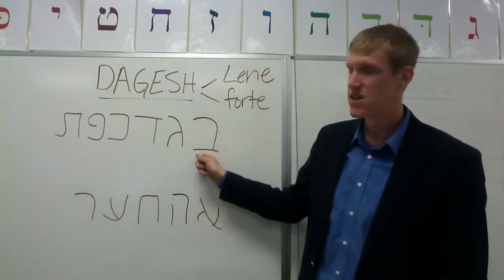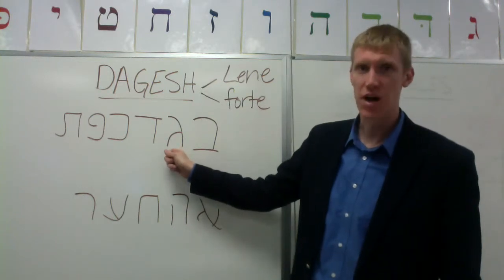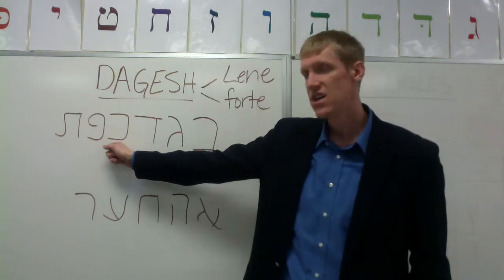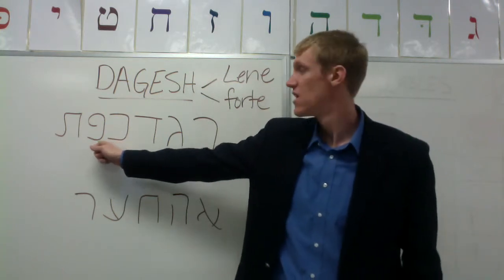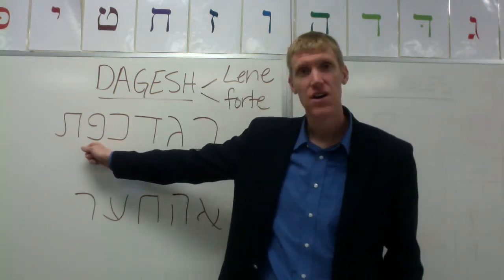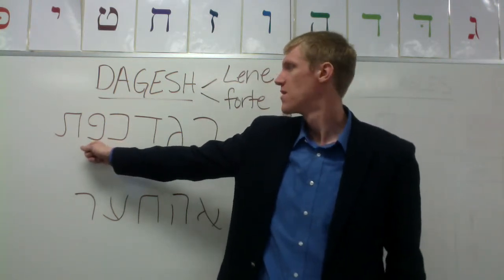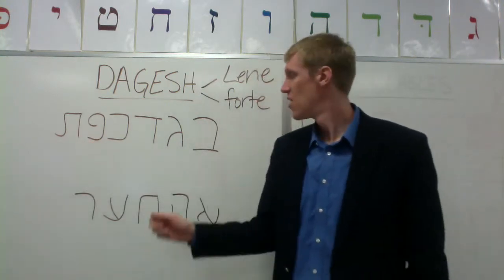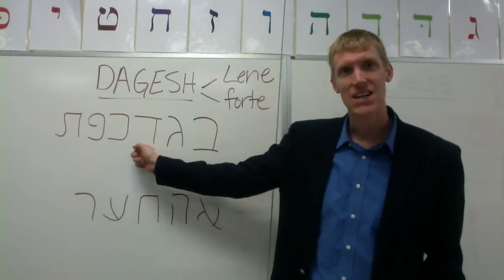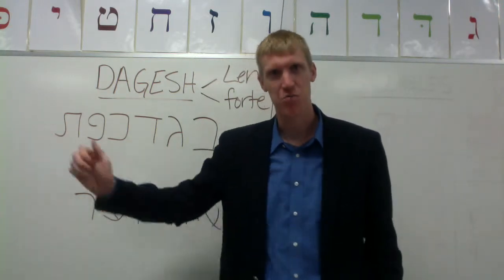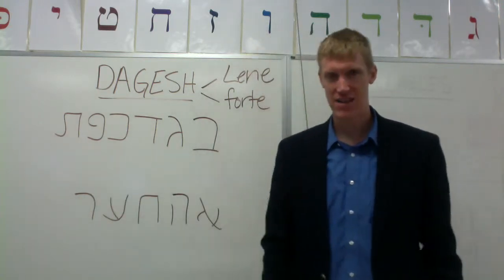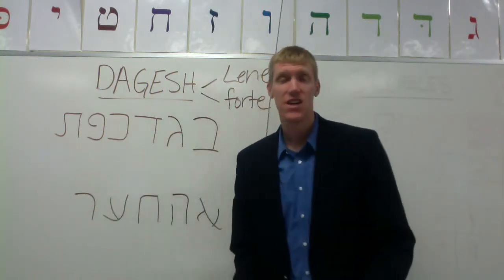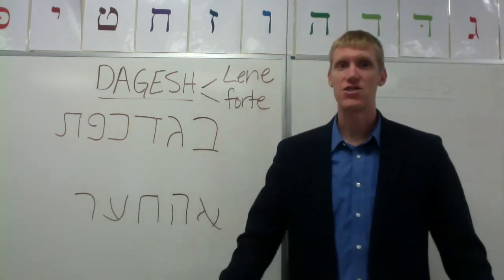B for beit, G for gimel, D for dalet, K for kaf, P or F for the pey, and T for tav. Begad kefat. Only these six letters can receive a dagesh lene.